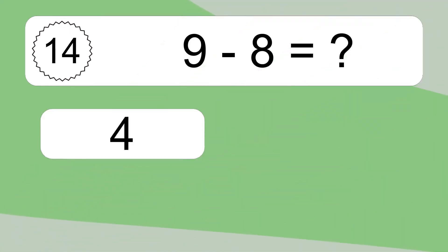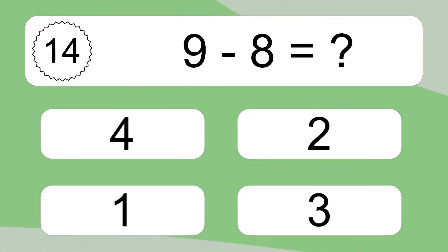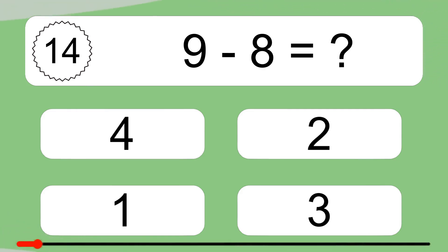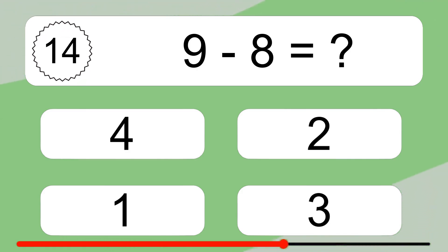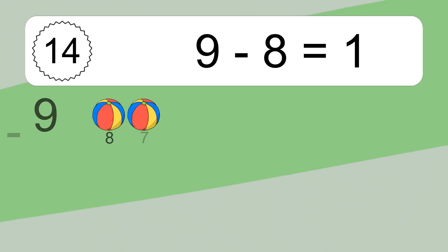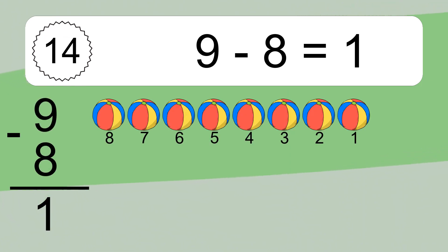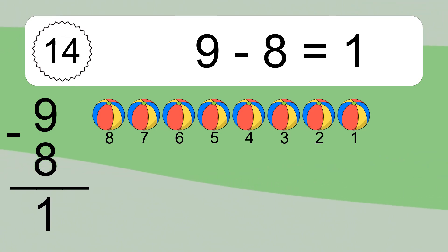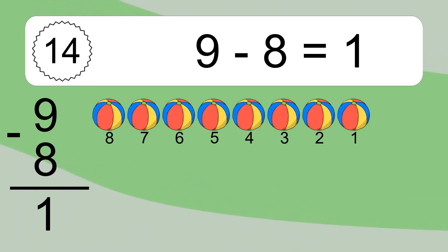9 minus 8 equals what? 9 minus 8 equals 1. Let's count it! 8, 7, 6, 5, 4, 3, 2, 1.